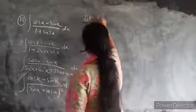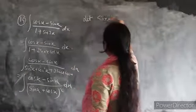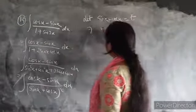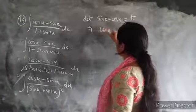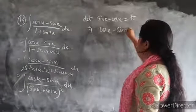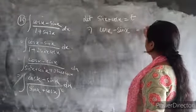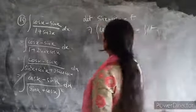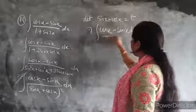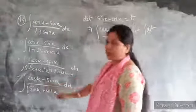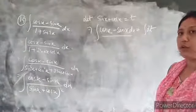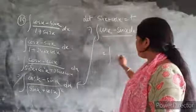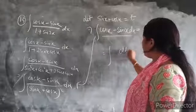Suppose we let t equal sinx plus cosx. Then differentiating, d/dx of (sinx plus cosx) equals cosx minus sinx. So the numerator cosx minus sinx is already present as dt, meaning we can directly substitute. The integral becomes integration of dt/t².